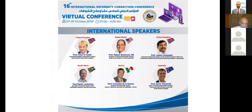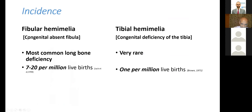What's the difference? Fibular hemelia is congenital absence of the fibula. Tibial hemelia is congenital deficiency of the tibia. They are just different terms. Fibular hemelia is the most common long bone deficiency, occurring at 27 per million births, while tibial hemelia occurs at one per million births.